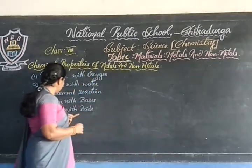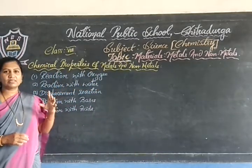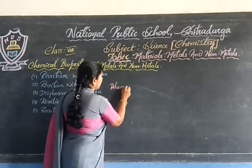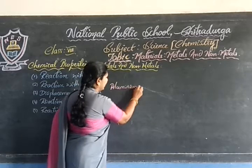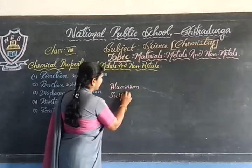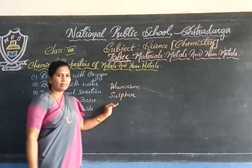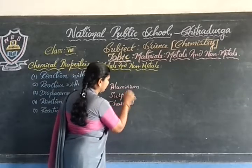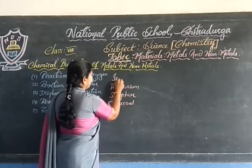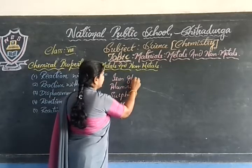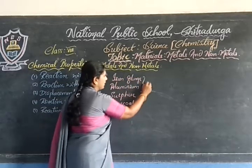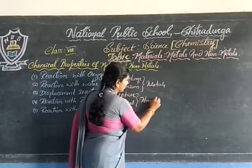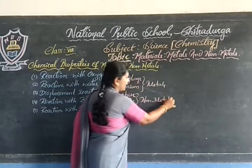In this reaction with acids, here 4 samples we have taken: one is aluminium, which is a metal; then sulphur powder, which is a non-metal; then charcoal, which is also a non-metal; along with the metal, iron filings. So here I have taken 2 metals and 2 non-metals to see the reaction with acid.